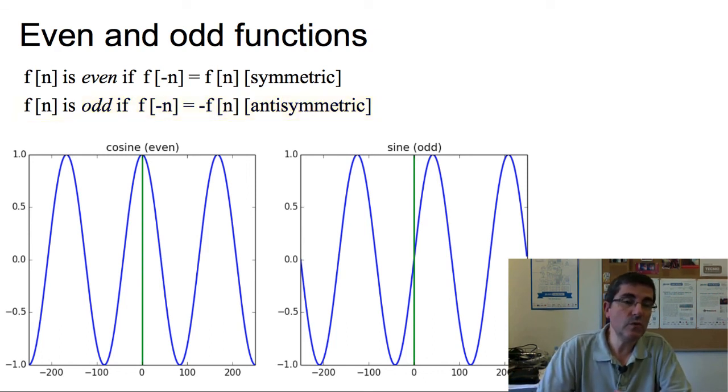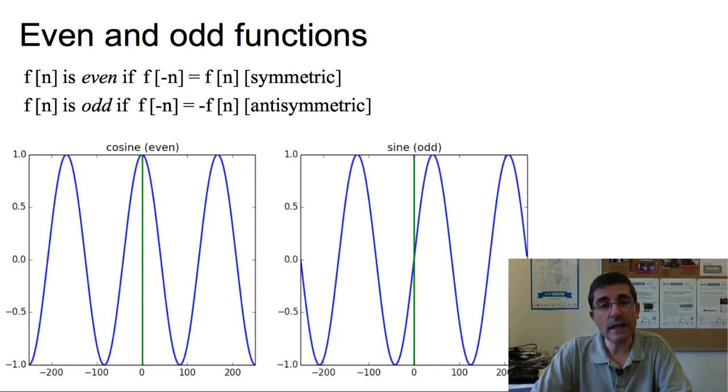So, the case of the two functions that we have been talking about, cosines and sines, very much exemplify these two types of properties. A cosine is an even function, because it's symmetric around the origin, about the point zero. And the sine is an odd function, because it's anti-symmetric. Around zero, we have this anti-symmetric. So, this is going to be also relevant in some of the things we will be talking about.